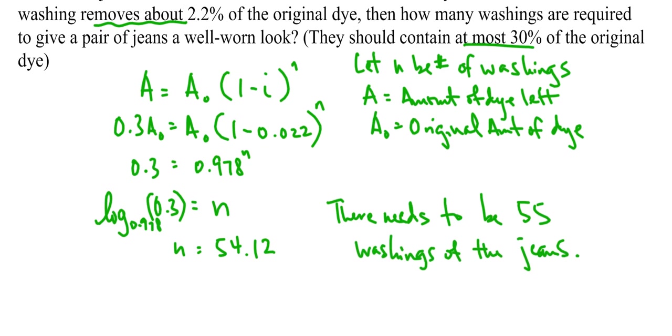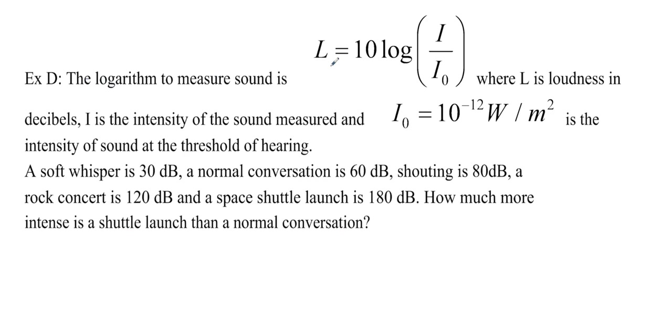Word problem, word solution. Last one. The logarithm to measure sound is L equals 10 log I over I naught, where L is loudness in decibels and I is the intensity of the sound measured. I naught is 10 to the negative 12 watts per meter squared. That's the intensity of sound at the threshold of hearing. So the very softest thing that you can hear has 10 to the negative 12 as its intensity. So it gives you a few things. Soft whisper is 30 decibels, normal conversation 60, shouting 80, rock concert 120, space shuttle launch 180. So how much more intense is a space shuttle launch, that's 180, than a normal conversation, which is the 60. So we're just going to solve for the intensity and then we will divide again.